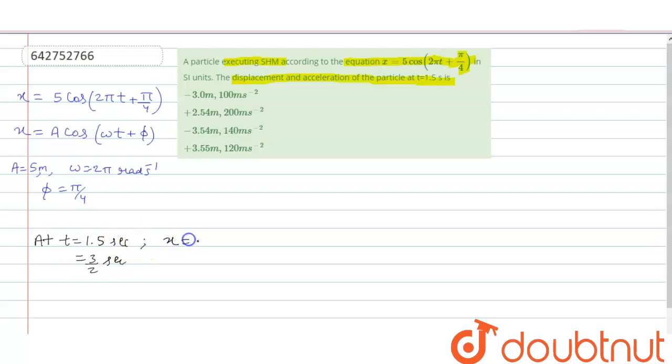x is equal to 5 cos 2 pi into 3 by 2 plus pi by 4. So, it becomes 5 cos 3 pi plus pi by 4 is minus cos pi by 4.